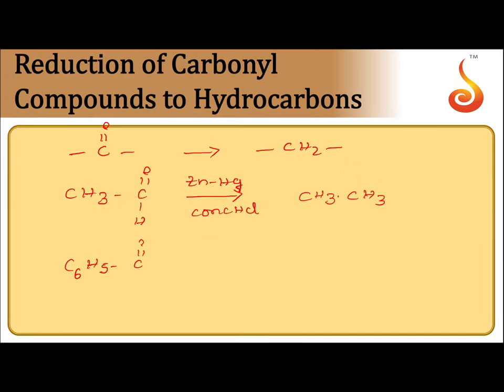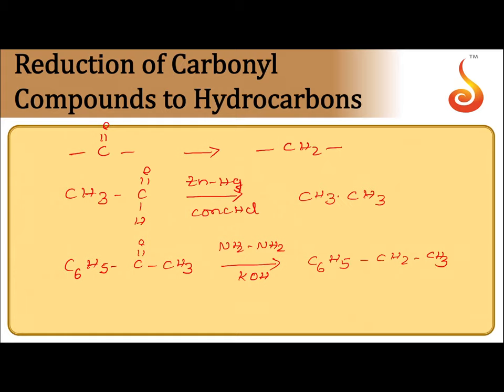Replacing C=O by CH₂ gives CH₃CH₃, the corresponding hydrocarbon. For another example: C₆H₅–C(=O)–CH₃ treated with hydrazine and potassium hydroxide — this is Wolff-Kishner reduction — the C=O group is replaced by CH₂ giving C₆H₅CH₂CH₃.